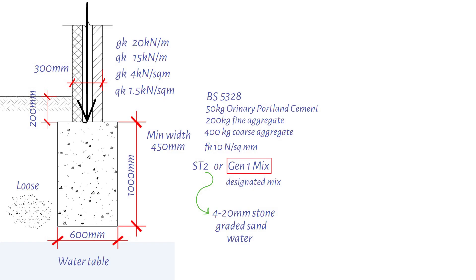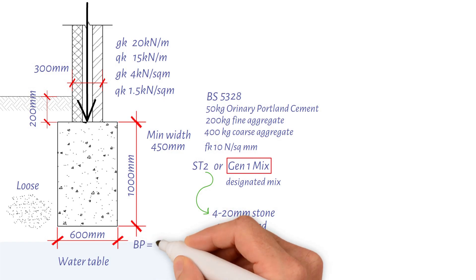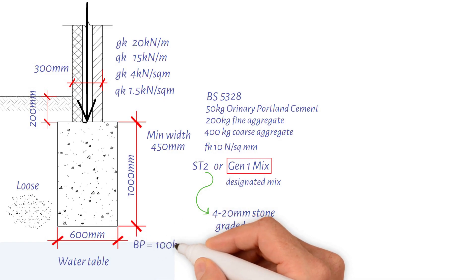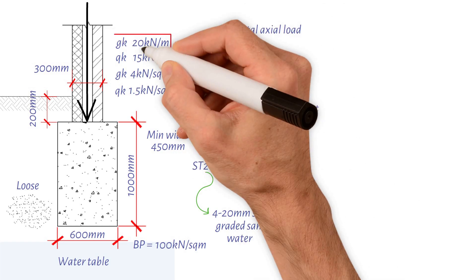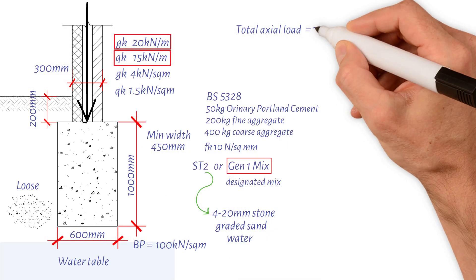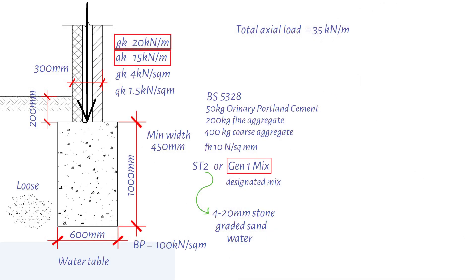As a result, we must calculate the maximum base pressure as well as the minimum depth of an unreinforced foundation. Assume a maximum bearing pressure of 100 kilonewtons per square meter. First, working out the total axial load, which equals 20 plus 15, giving us 35 kilonewtons per meter.